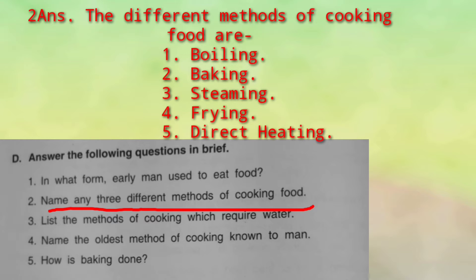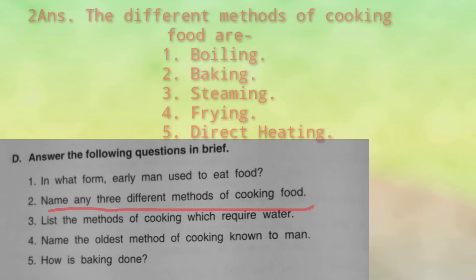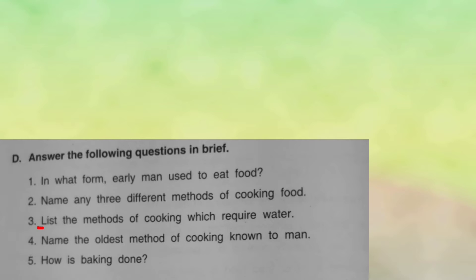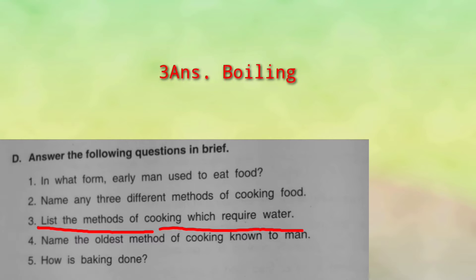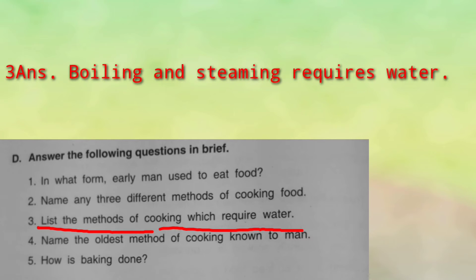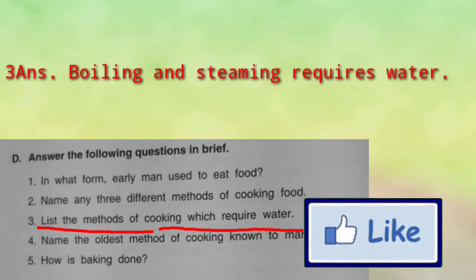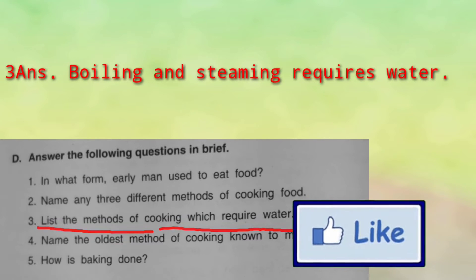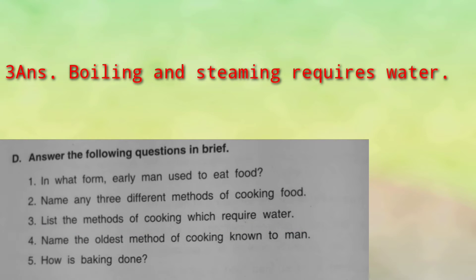We can also use 3 methods of cooking food which require water. First is boiling — we add water and boil the food in it. Next is steaming.